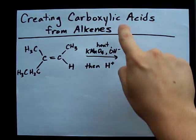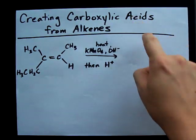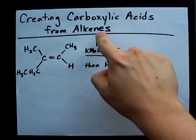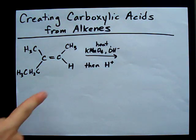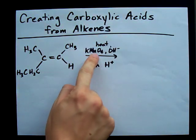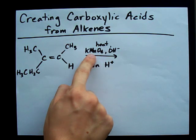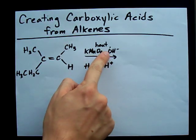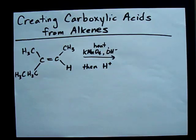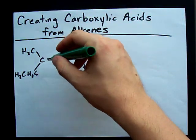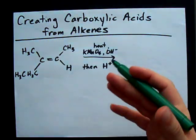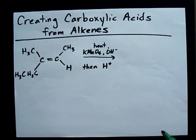If you're asked to make a carboxylic acid out of an alkene, I'm going to show you how. This page already shows you how: you heat it with potassium permanganate in a basic solution. What this does is it oxidatively cleaves the double bond, so you get a double bonded O on each side.